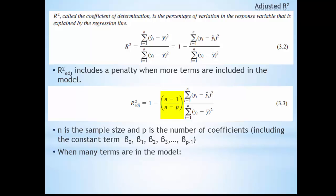So when there are many terms in your model, we have a larger p, then n minus 1 divided by n minus p tends to be a larger value, thus the adjusted R-squared value is smaller. So one approach to determining whether more terms should be added into a regression model is to decide that we will continue adding terms until the adjusted R-squared starts to decrease.